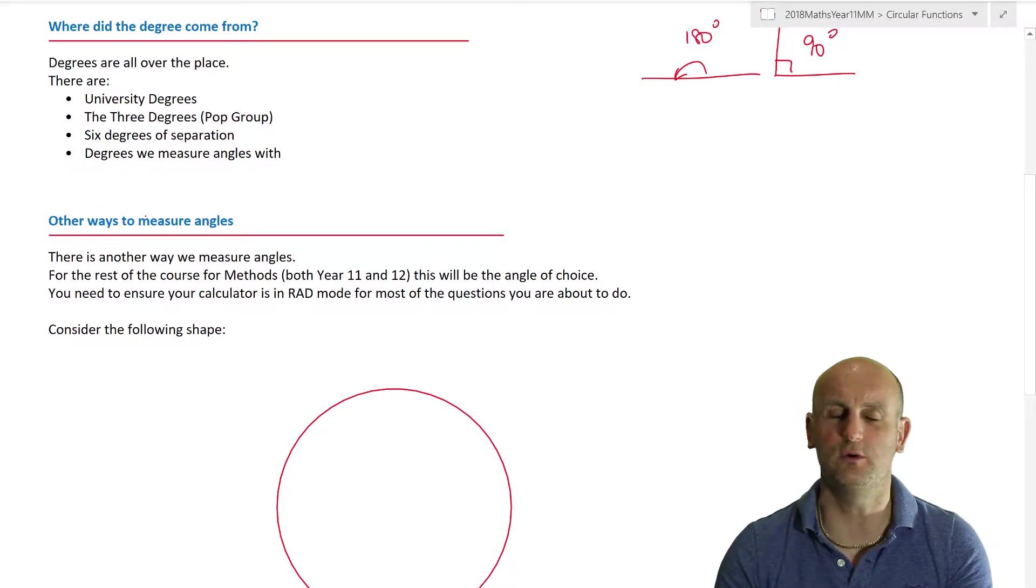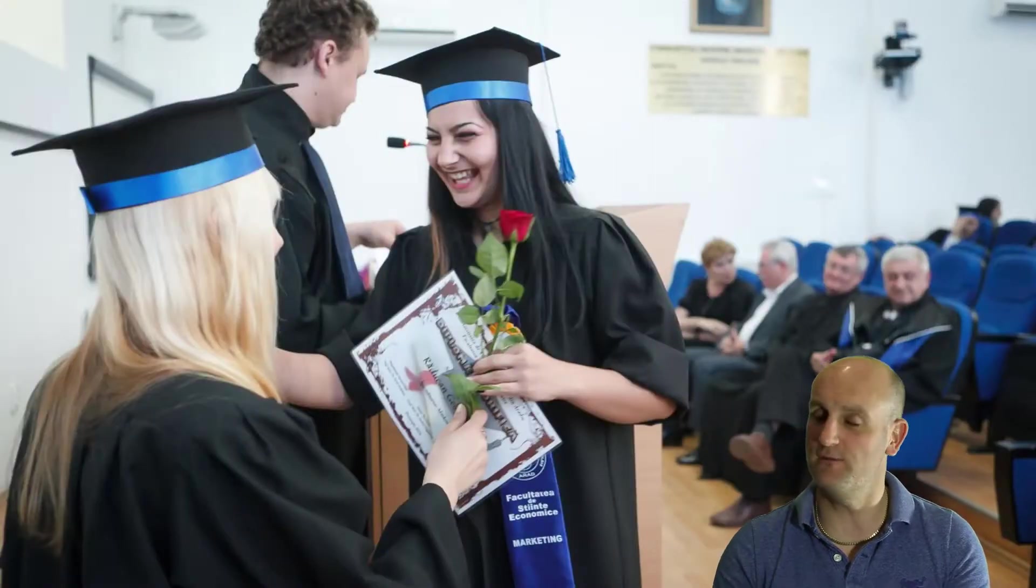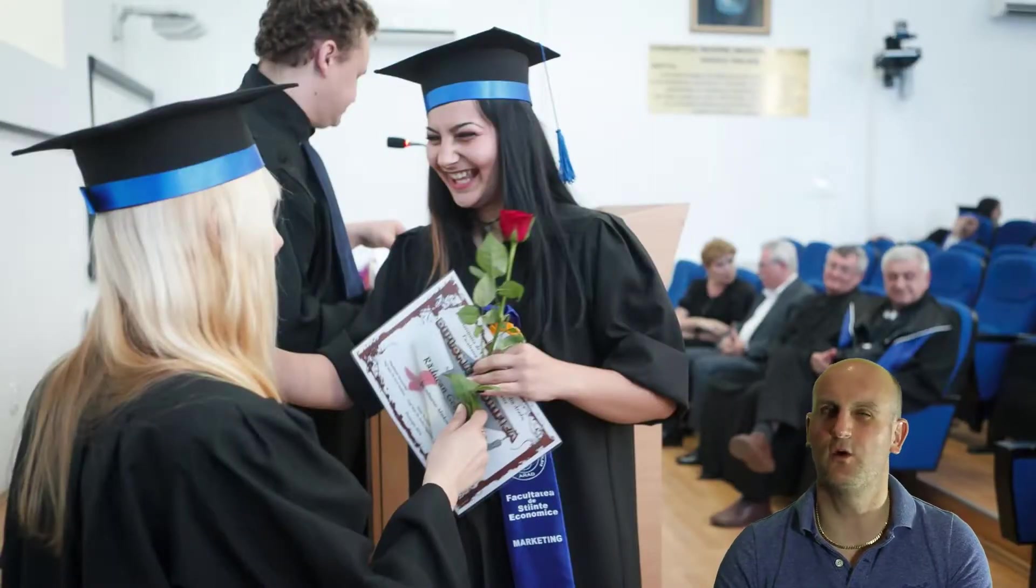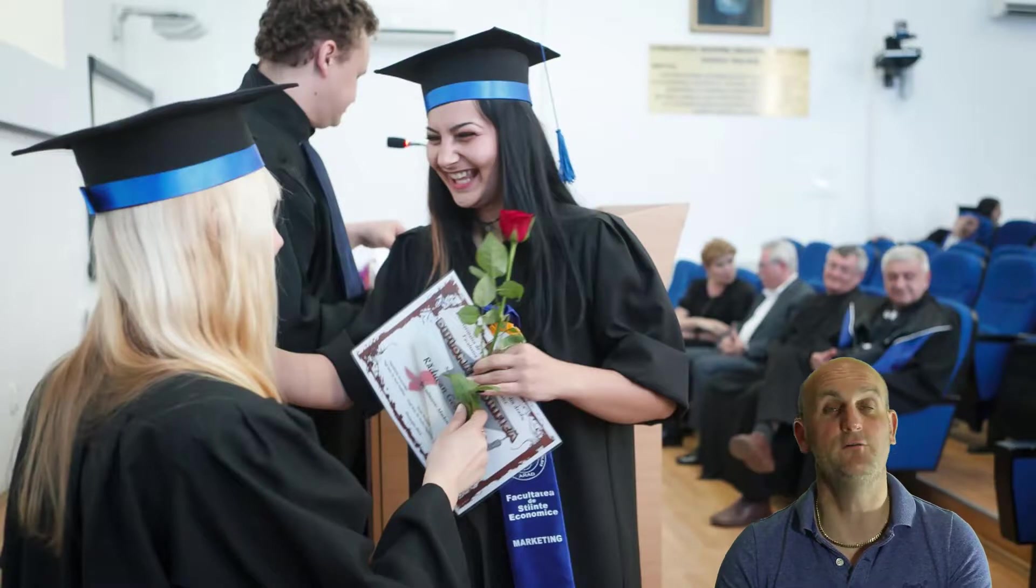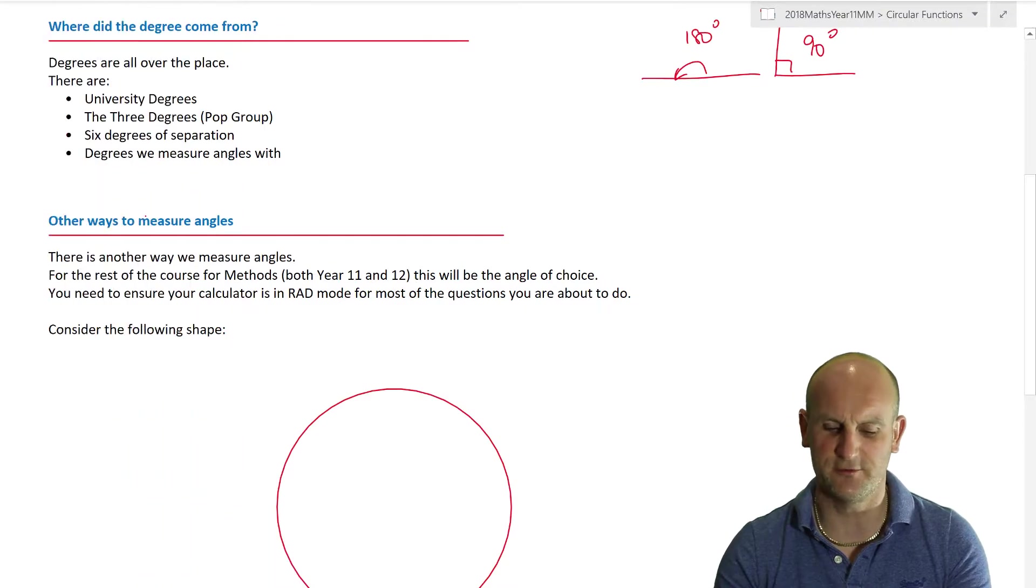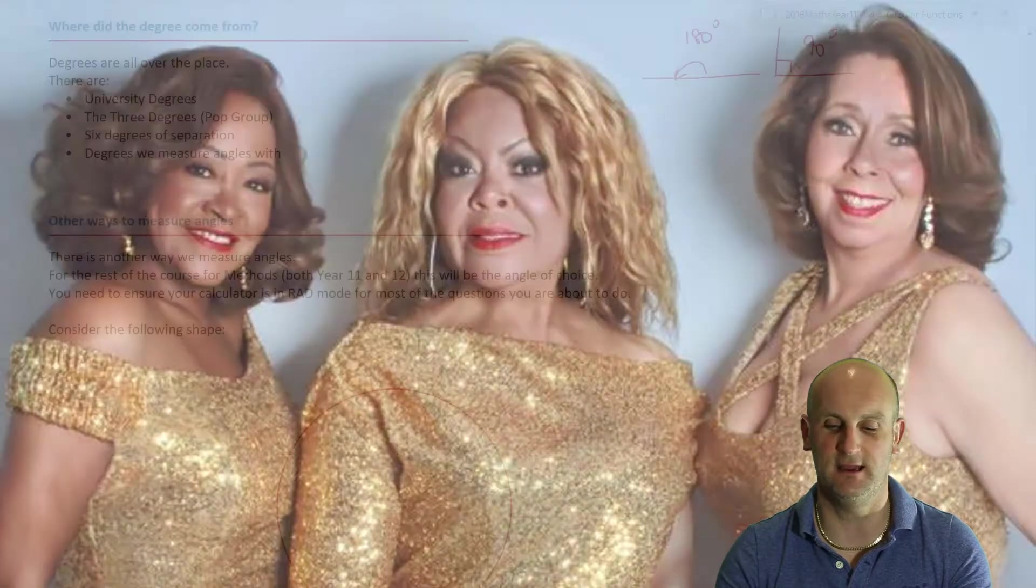So I went to Google, where does the degree come from? And Google wasn't particularly clever or very helpful. So firstly, there are these things called university degrees. That's not quite what I'm going to measure angles in, but hopefully all of you watching will get a university degree. Then there's these three degrees shown behind me. Now, if you have no idea who they are, me either. Not old enough. But I tell you what, show that to your parents or grandparents and I can guarantee they'll go, oh, they were hot, they were really sexy.